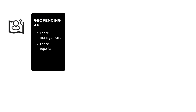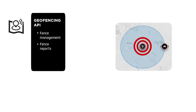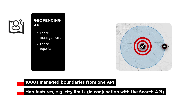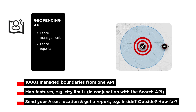And recently, we have released the GeoFencing API, where you can create and manage thousands of virtual boundaries from one central location. You can use map features like airport grounds or city limits, or defined geometric polygons to create fences. Then you can submit the location of your asset and get a report on whether it was inside, where, and how close, and so on.